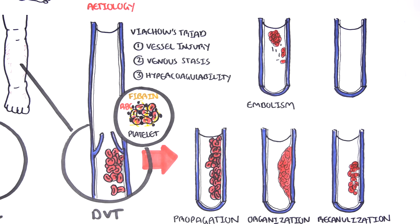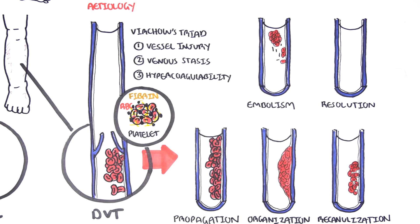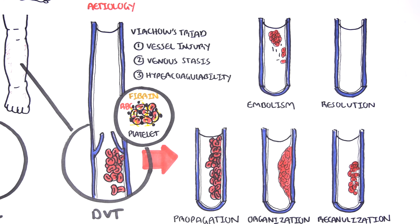Embolism, which means dislodgement of the thrombus, allowing the thrombus to travel around the body via the blood. And or resolution, the thrombus just gets broken down by plasmin, by factors that we have in our own body.